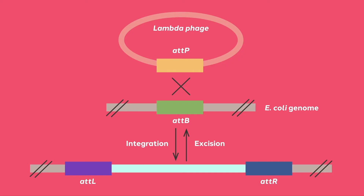In this diagram, you can see that the integration system involves specific DNA sequences found on the phage at P sites, as well as sites found on the bacterial genomic target at B. Recombination between the B and P elements results in new recombination sequences flanking the inserted phage DNA. After insertion, the recombination sequences are now called at L and at R.